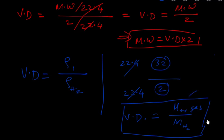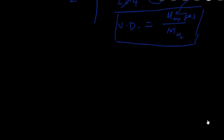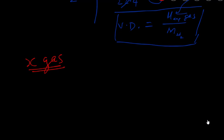In olden days — say around 1800 — if you had an unknown gas, call it gas X, you'd want to know what it is. Without spectroscopic techniques, you'd use classical chemistry, but you still needed to find the molecular or atomic mass of the gas.